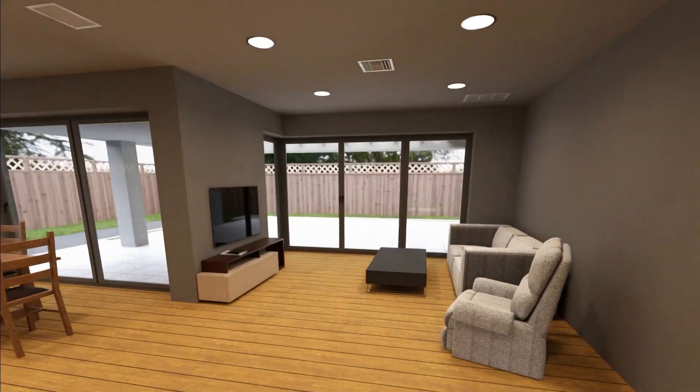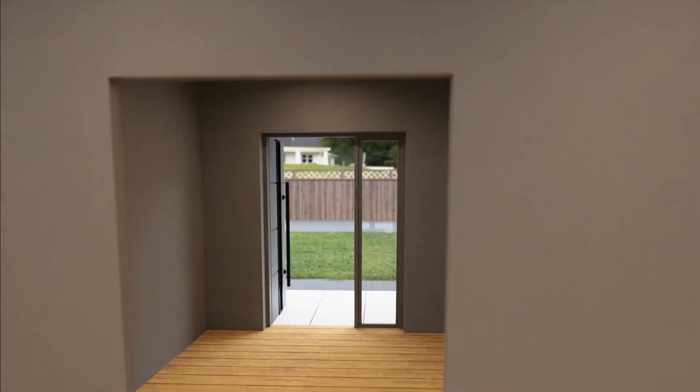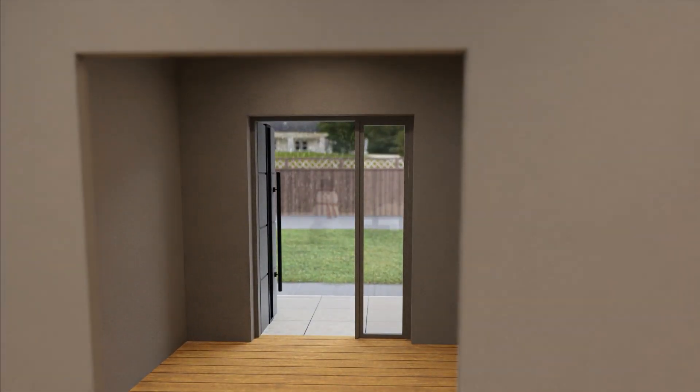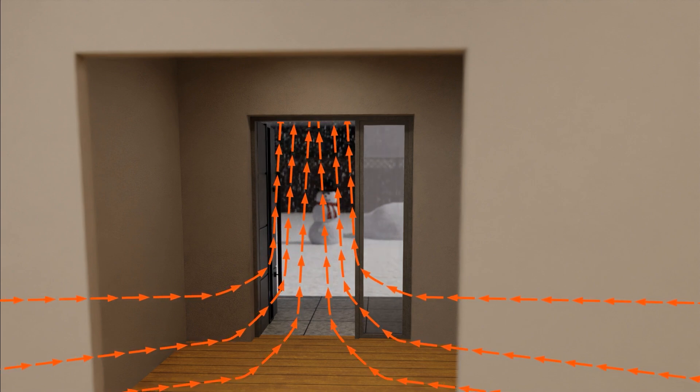Inside a home, we often see undesirable convection in simple cases, like when doors and windows are open. If the temperature outside is lower than the temperature inside and we were to open a door, we would lose heat from the home as those molecules move outside.